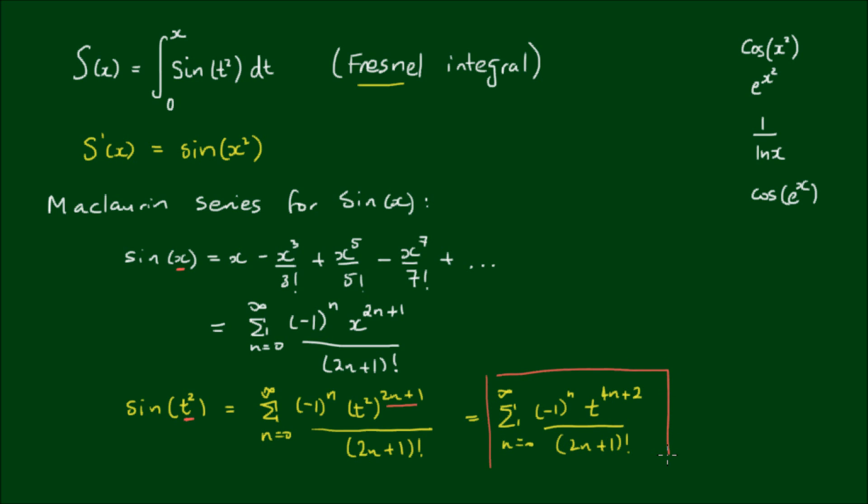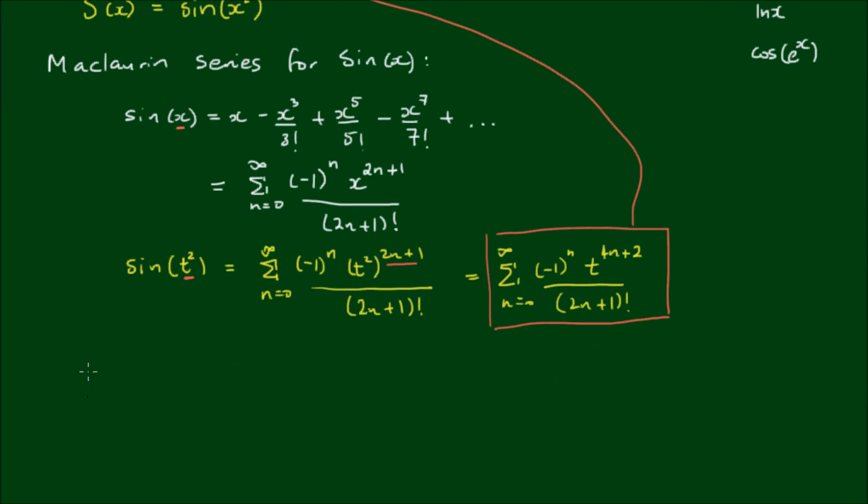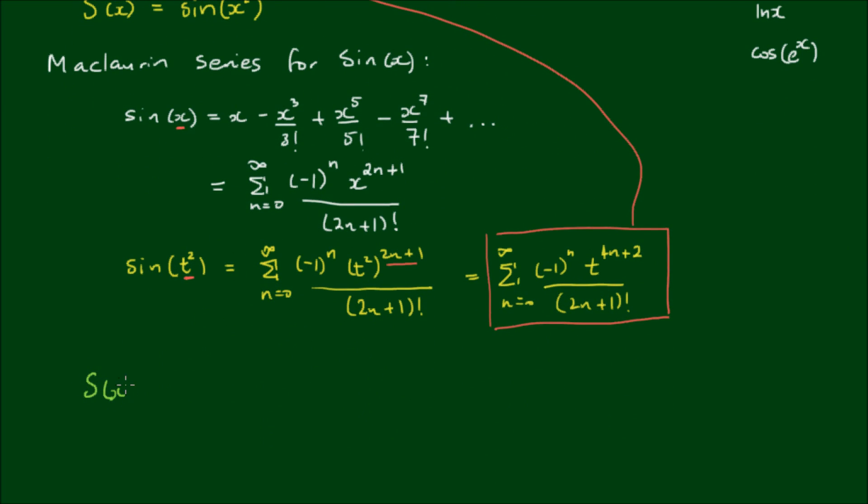Now this expression for sin(t²) can then be substituted here, and then we can perform this as a simple power integral. So the function S(x) is equal to the integral from 0 to x, of the sum from n equals 0 to infinity, of (-1)^n, by t^(4n+2), all over (2n+1) factorial, with respect to t of course.